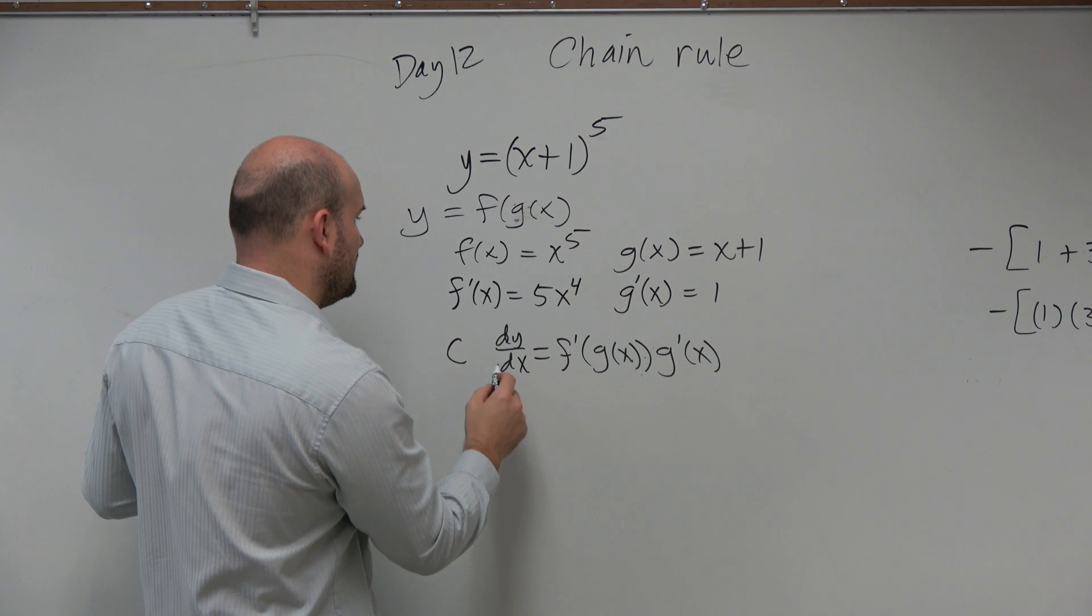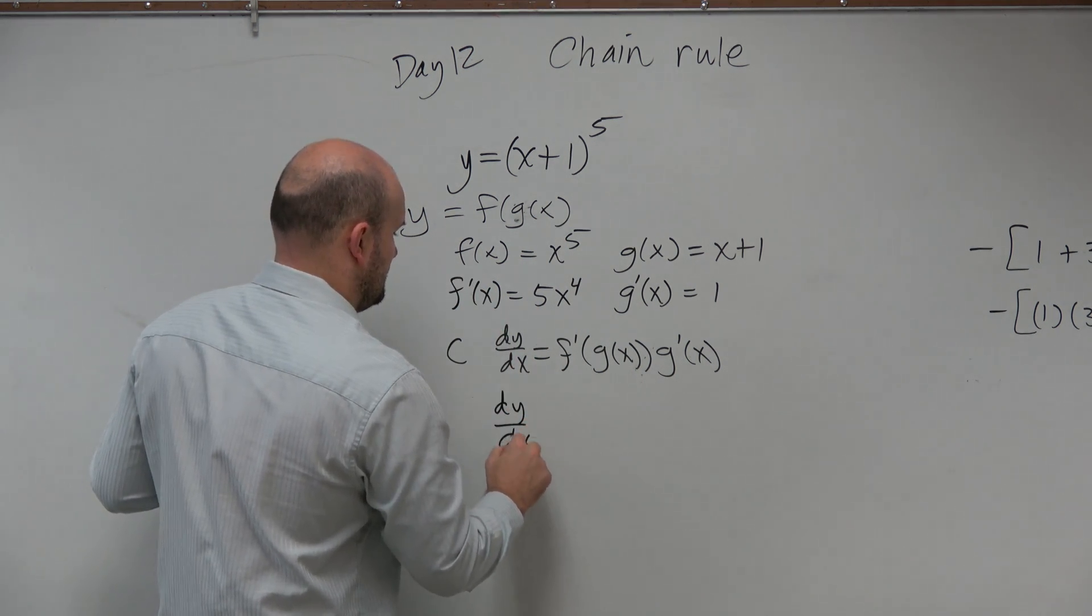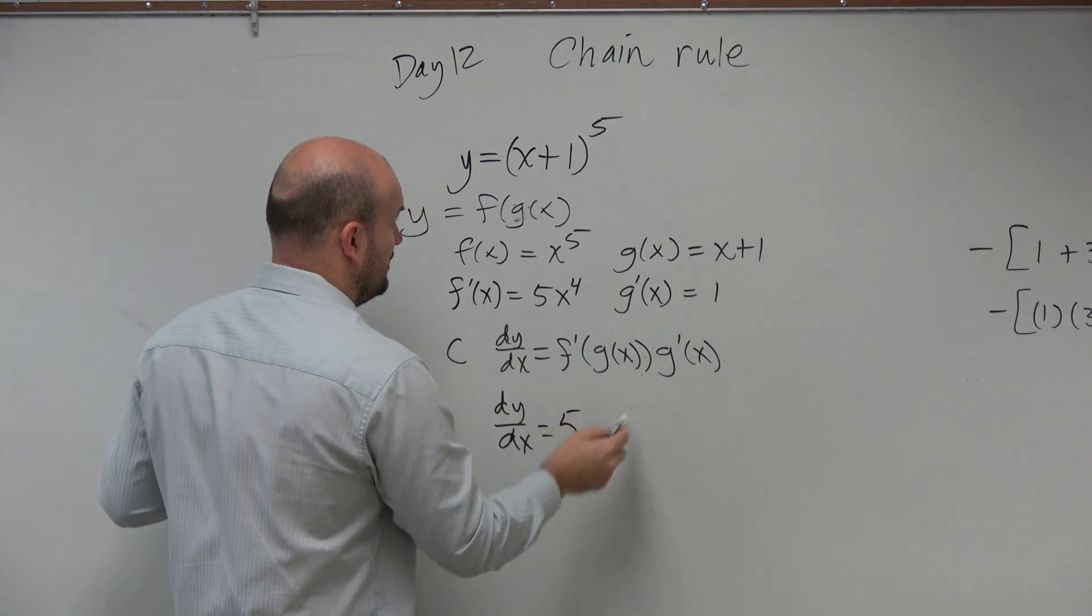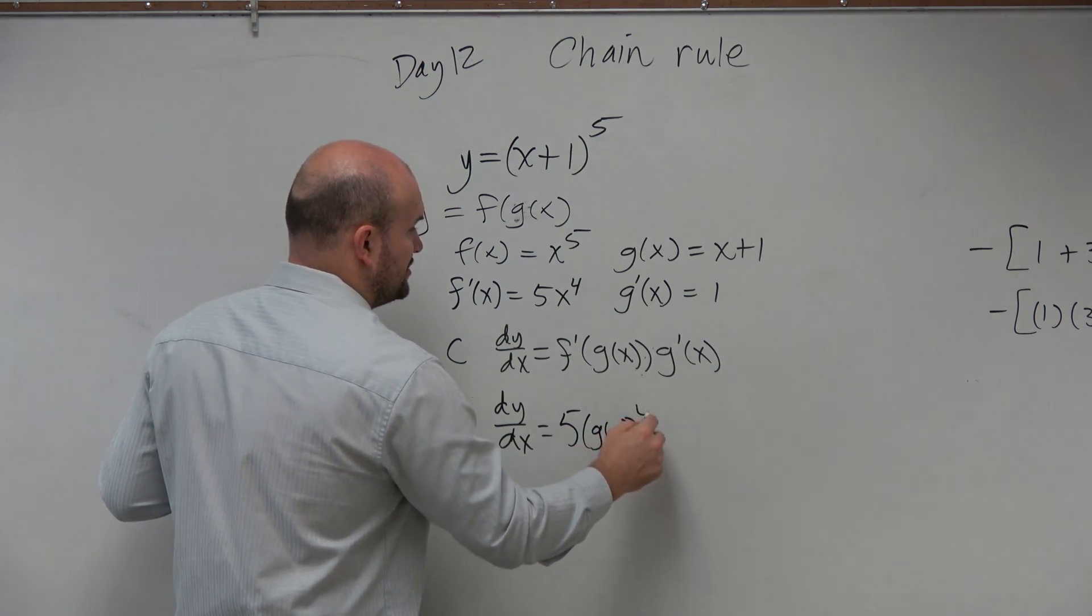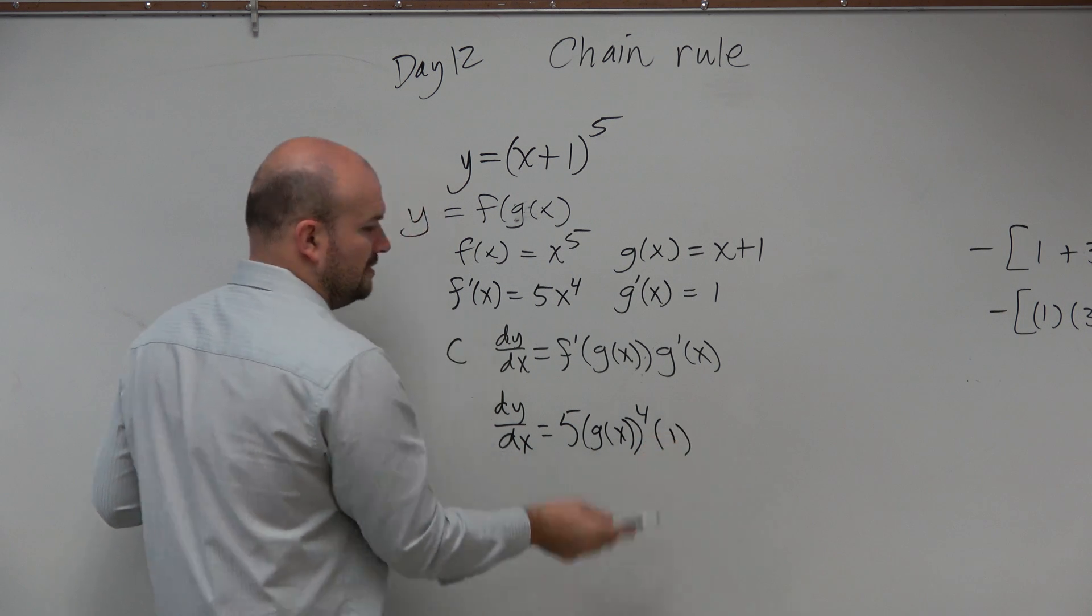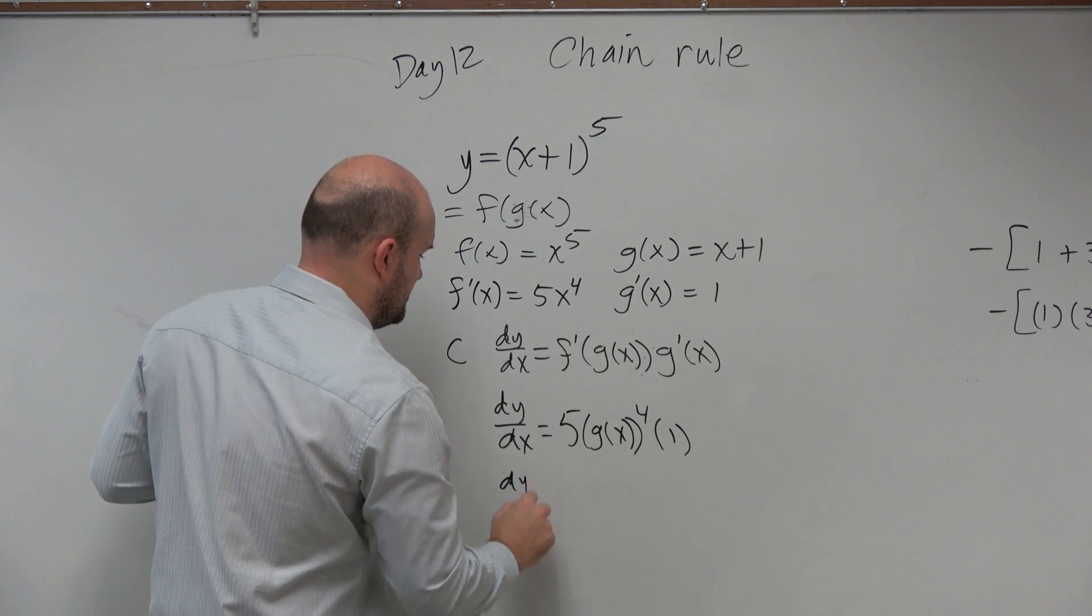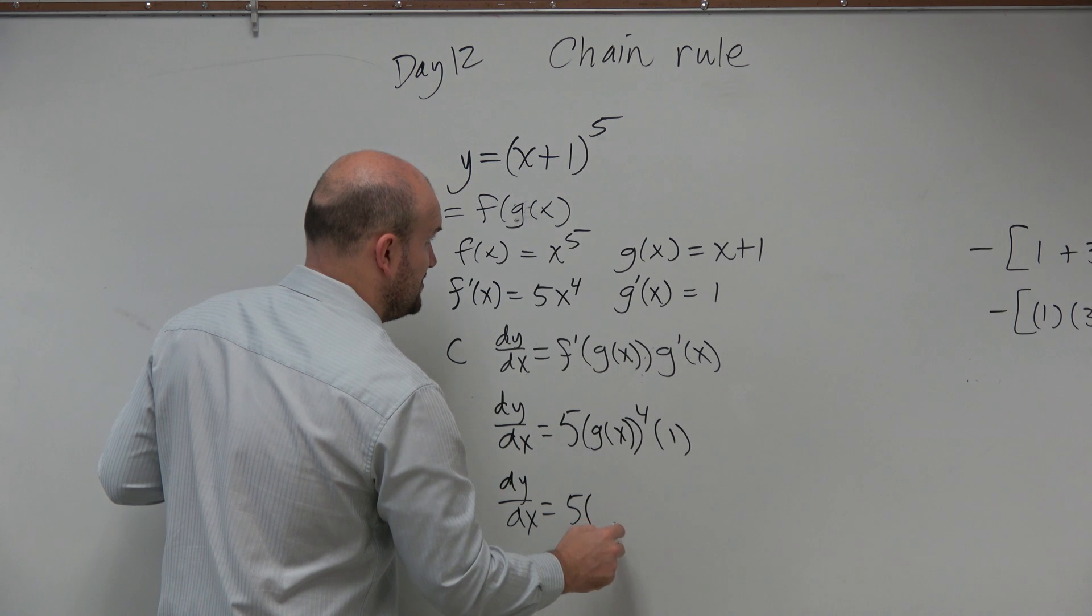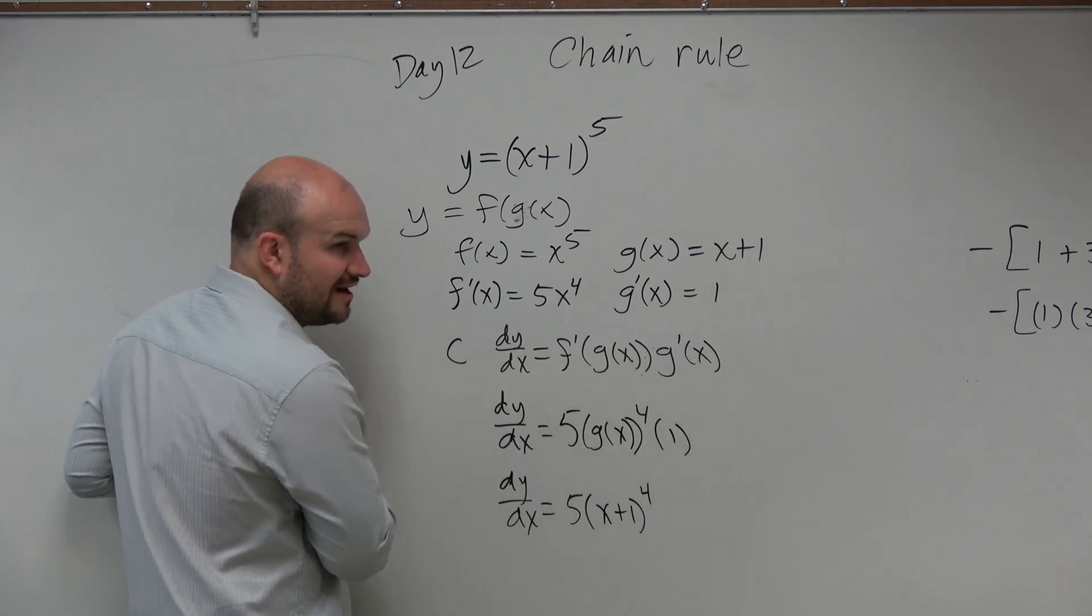So if we are going to find the derivative dy/dx, what I'm simply going to do is take f prime of g of x times g prime of x, which is 1. And what is g of x? That's x plus 1. So dy over dx is equal to 5 times x plus 1 to the 4th times 1, which we'll just leave as 5 times x plus 1 to the 4th.